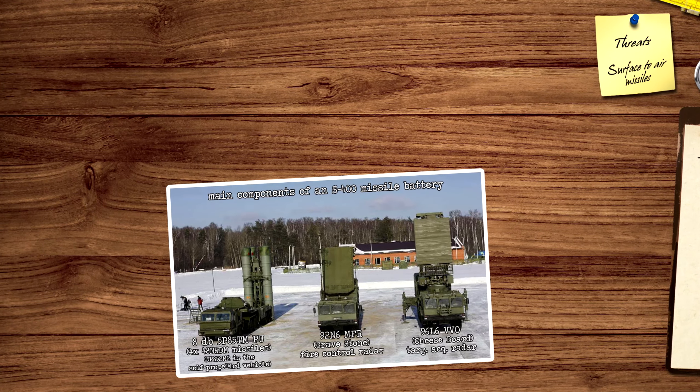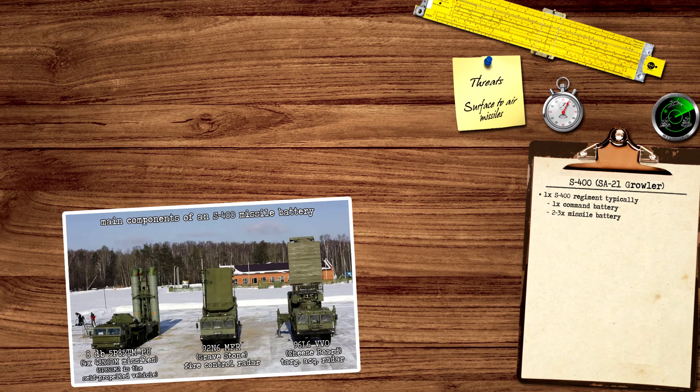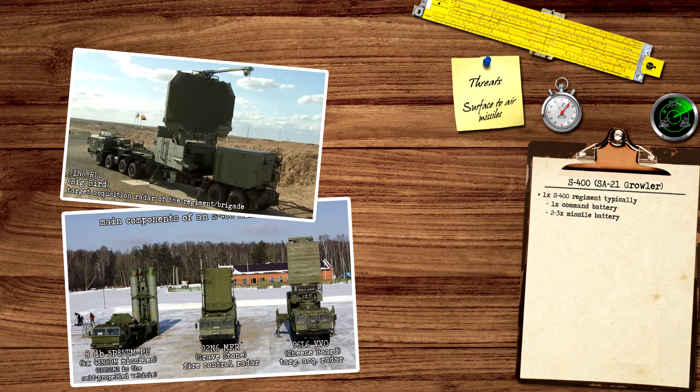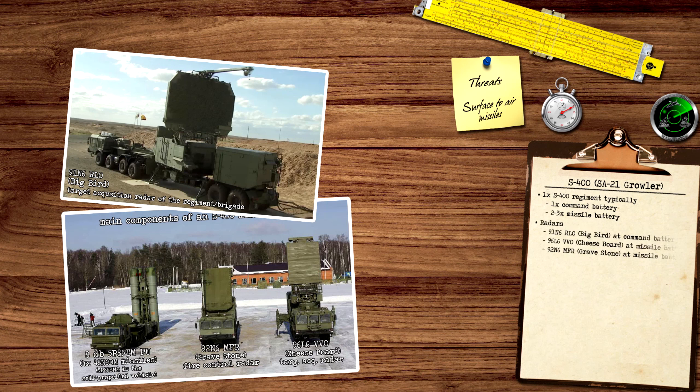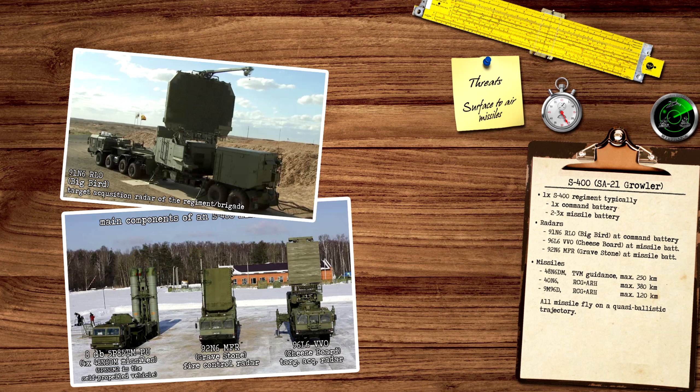Each S-400 missile battery has its own 360 degree search capable target acquisition radar and the fire control radar. The missile batteries are organized into missile regiments, where each regiment is commanded by the command battery with a long-range target acquisition radar, the latest variant of the Big Bird radar family. Each S-400 missile battery typically has 8 tracked or wheeled missile launchers, each with 4 missiles.